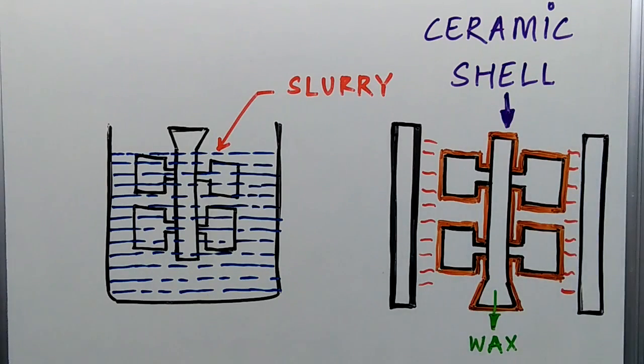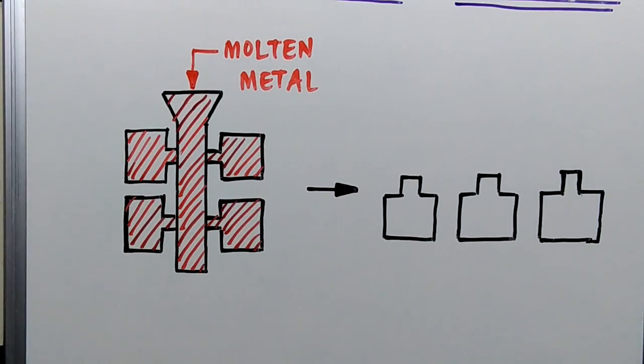And then what we get is this shell which is coated with ceramic. So afterwards, this shell is then heated in order to remove the wax and the liquid wax comes out through the pouring cup. So once we have removed all the wax from the ceramic shell, we then proceed to pour our molten metal into the ceramic shell and then it is allowed to solidify for some time.